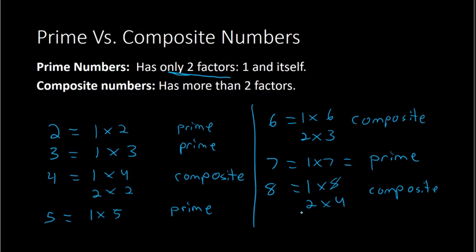In English, the word 'composite' contains the root word 'compose,' which means something is made up of more than one thing. So composite has the idea of being made up of more than just the factors 1 and itself — it has other factors as well. Make sure you know the difference between prime and composite numbers.